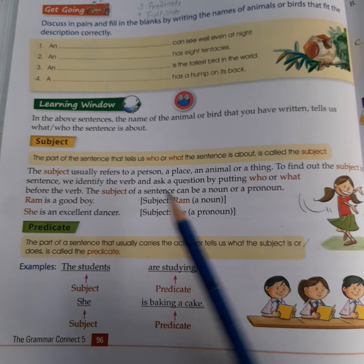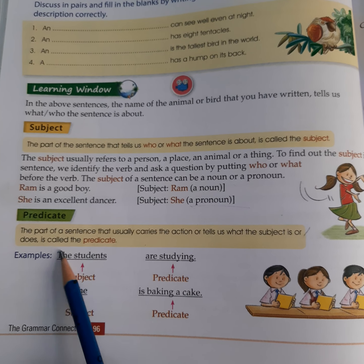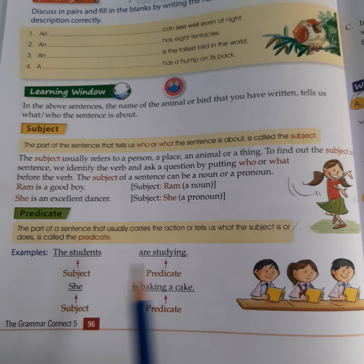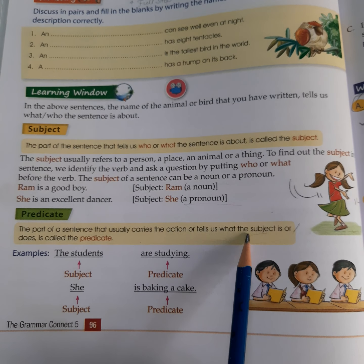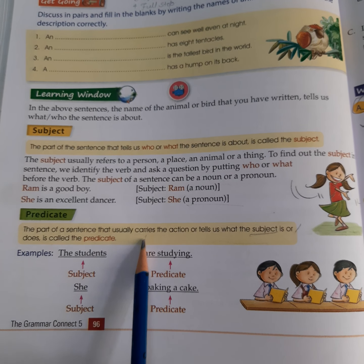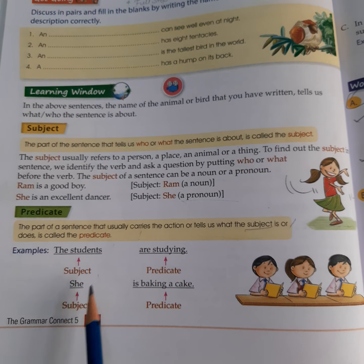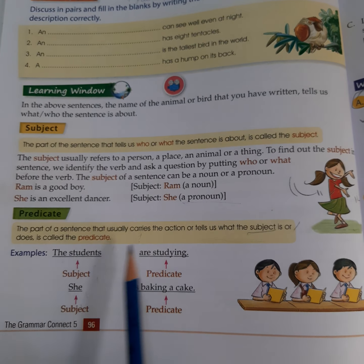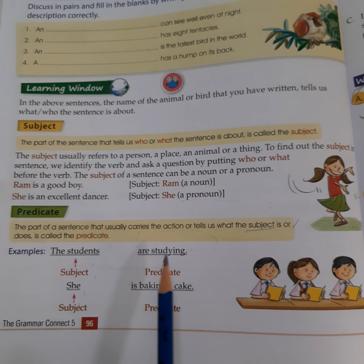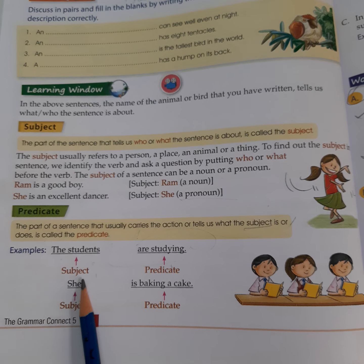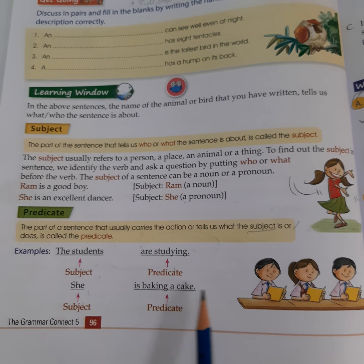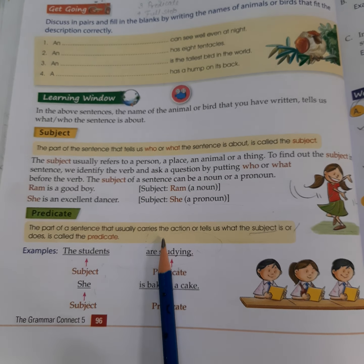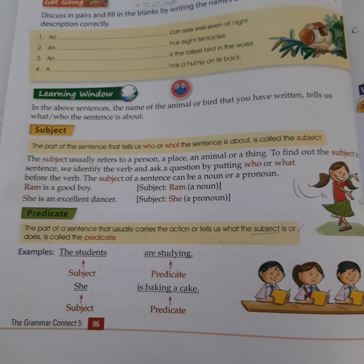Next is predicate — the part of a sentence that usually carries the action or tells us what the subject is or does is called a predicate. For example, the student is a subject. What the students are doing — the students are studying — so 'are studying' is a predicate. She is baking a cake — these details about the subject are called predicates.